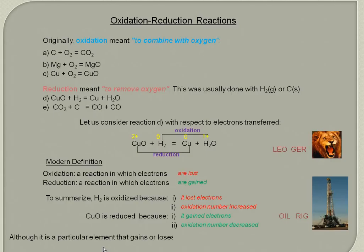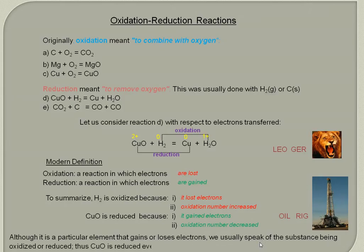The final comment is to note that although it is a particular element that gains or loses electrons, we usually speak of the substance being oxidized or reduced. For example, we say that copper oxide has been reduced even though it's actually the copper itself that has undergone the reduction. So don't let yourself be confused by this. We always talk about the substance copper oxide as being reduced, even though it's only one of the elements in there that's actually undergoing the reduction. So that ends the introduction to electrochemistry. We have focused here on the meanings of oxidation number and the meaning of oxidation and reduction.